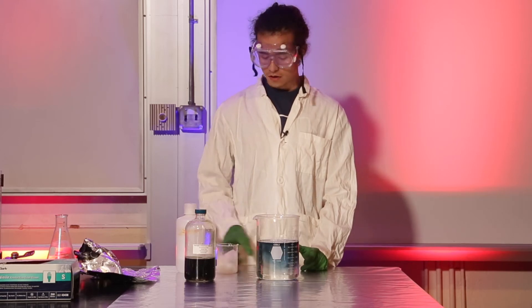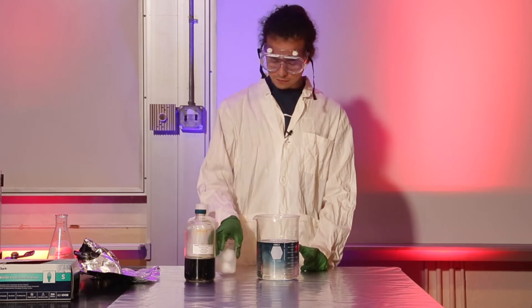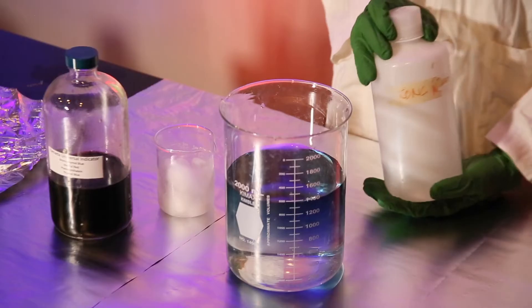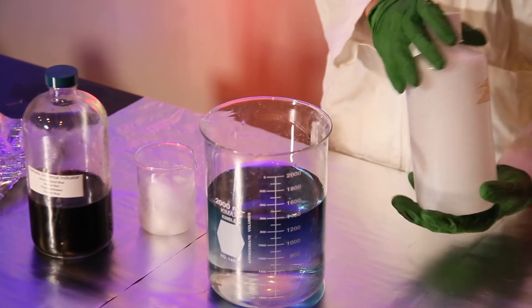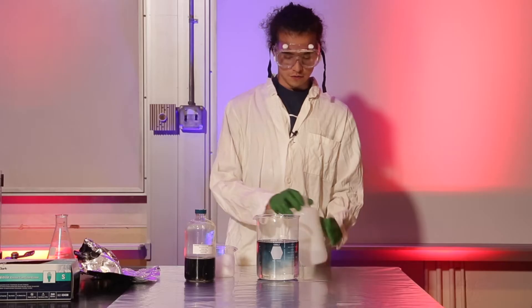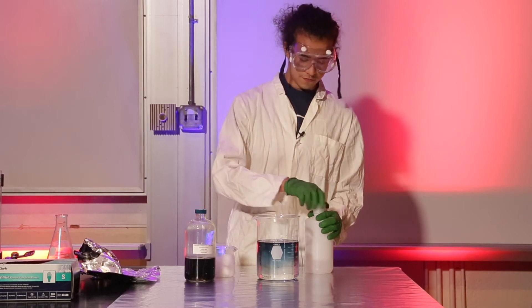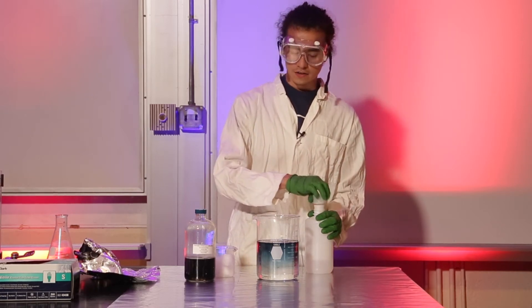Next up we want to see what's in this mysterious bottle. We can't exactly tell what's in here—we got the label ripped off. So we want to see if it's an acid or base, so we're just going to add it in and see what color it changes to.